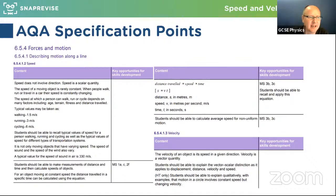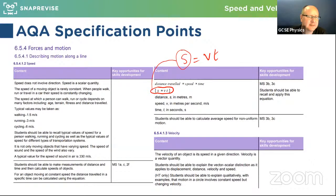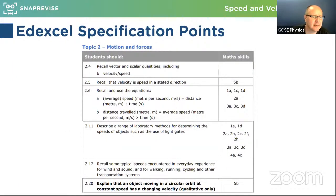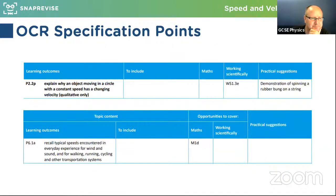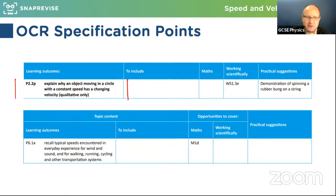Just a reminder: only higher students need to know about circular motion, and centripetal forces is an Edexcel-only topic. Motion graphs are in a separate tutorial. The specifications are quite similar across boards. AQA requires you to use the equation distance equals speed times time — written as s = vt, where s means distance or displacement. Edexcel similarly requires using that equation and describing methods to determine speeds. OCR is the same; 2.2P for OCR (higher only) asks you to explain why an object moving in a circle at constant speed has changing velocity.